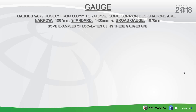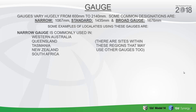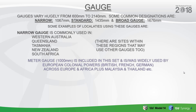Some common gauge designations are narrow, which is generally 1067 mm; standard, around about 1435 mm; and broad gauge, which would be 1676 mm. Some examples of localities using narrow gauge are Western Australia, Queensland, Tasmania, New Zealand, and South Africa. Of course, there are sites within each of these regions that may use other gauges as well.